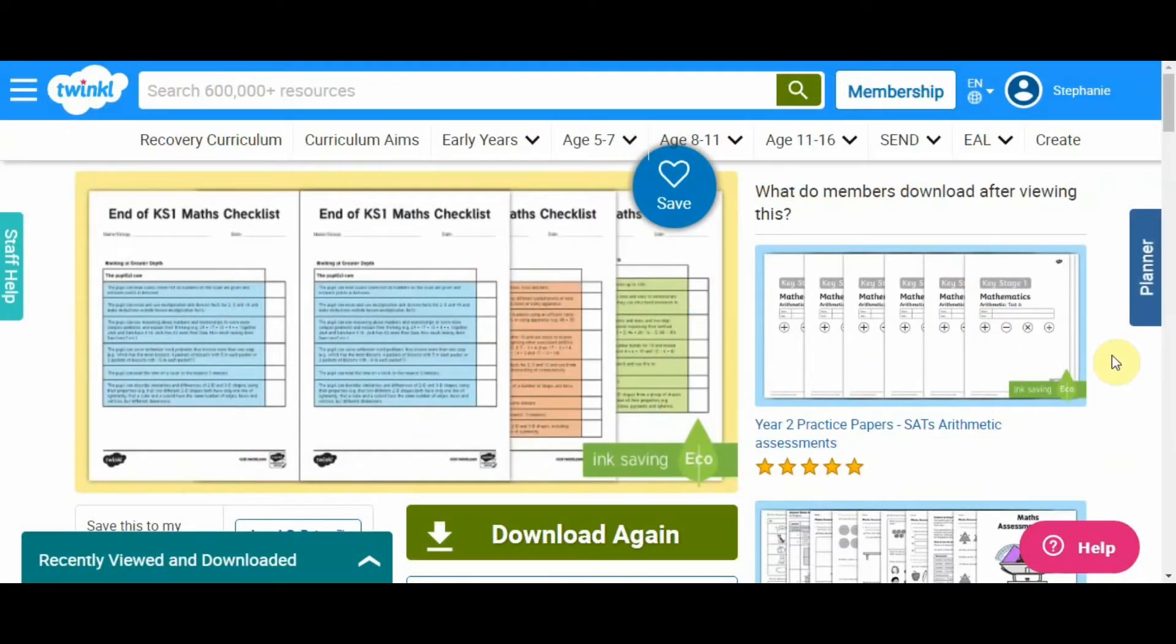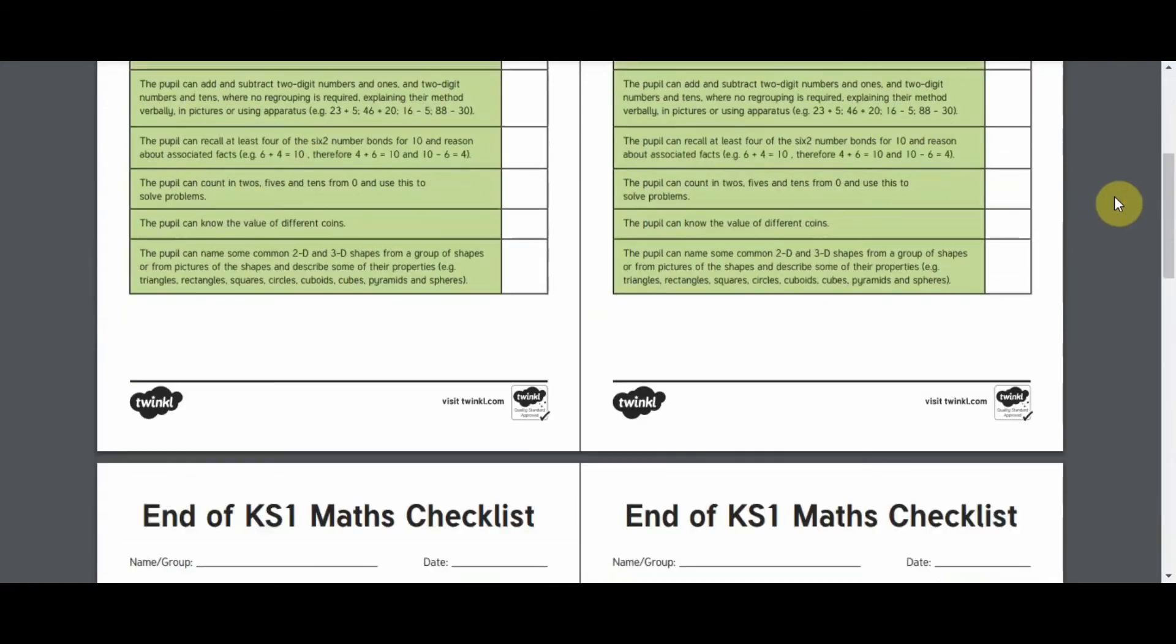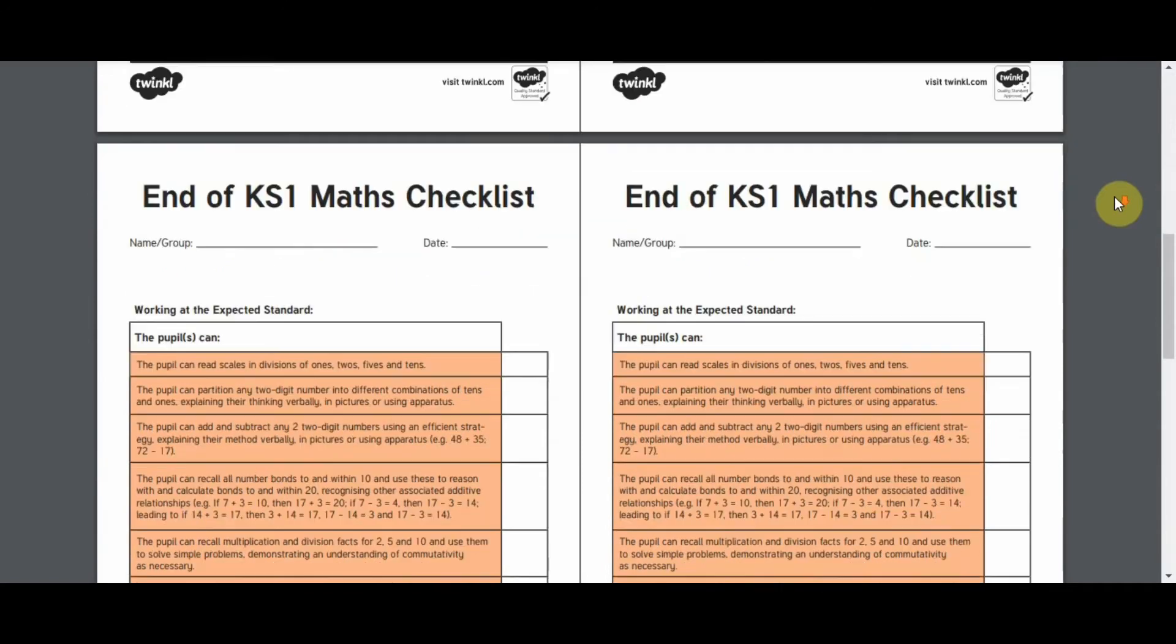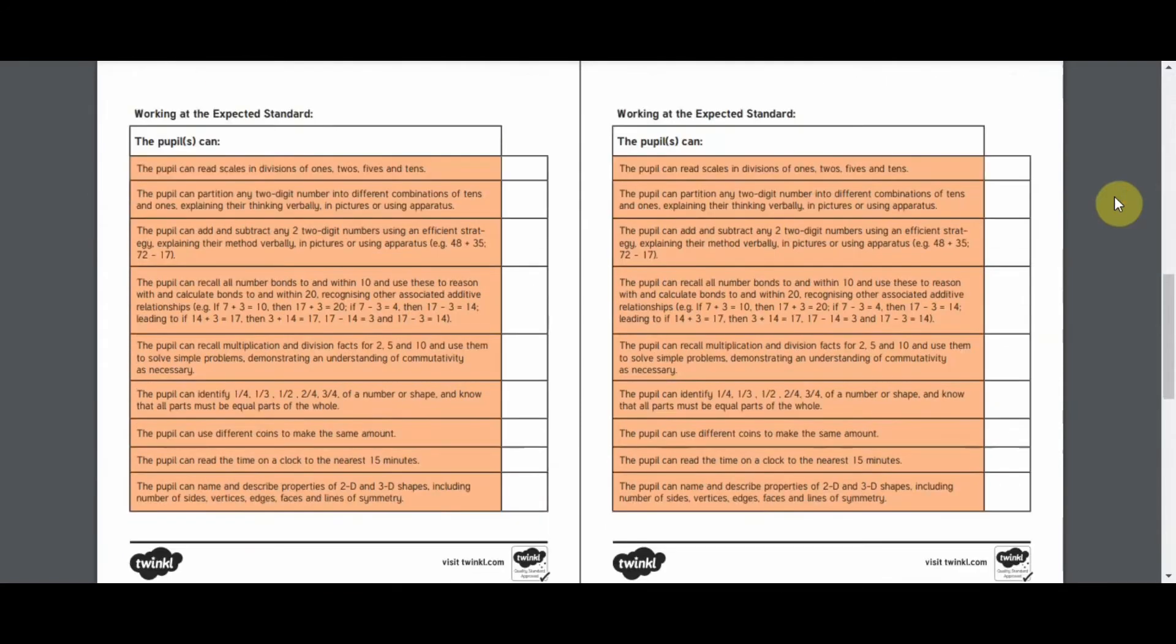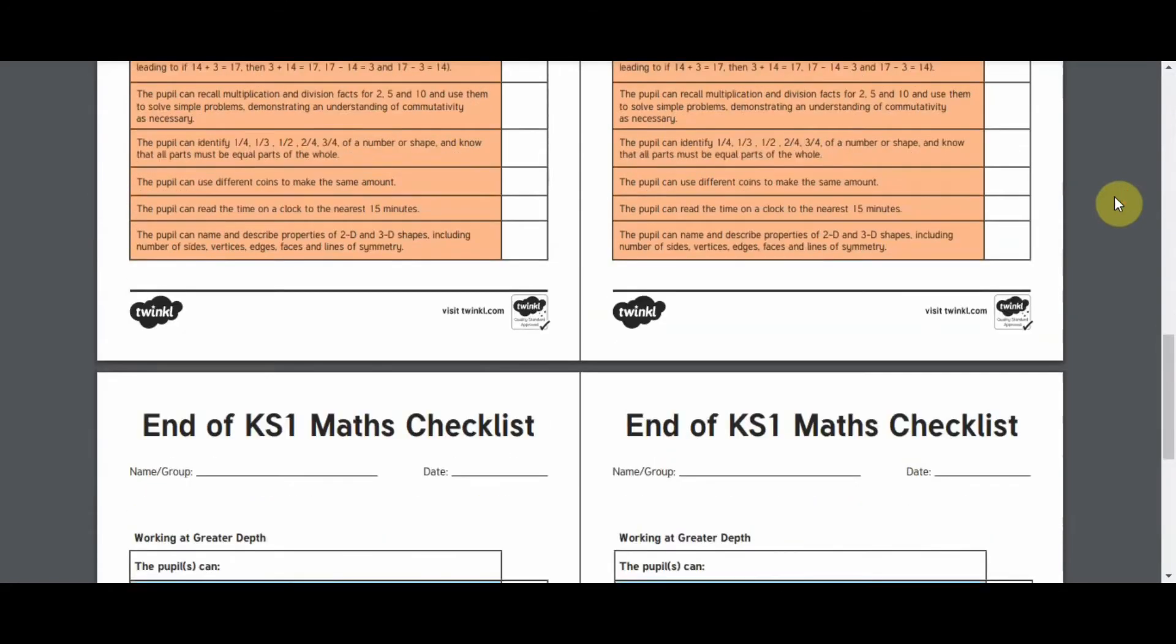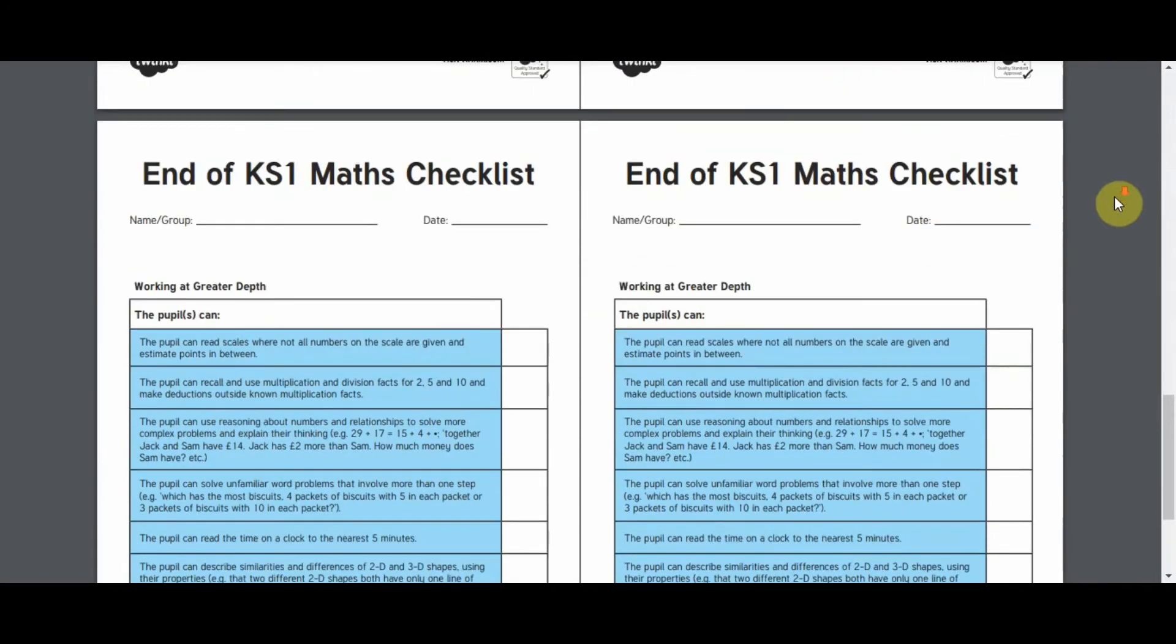Use these Twinkle checklists to keep track and record evidence of how well your year 2 pupils are doing in maths. The age-related expectations relate to the guidance in the teacher assessment framework at the end of Key Stage 1.